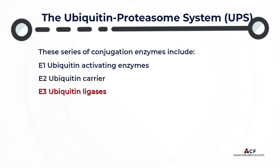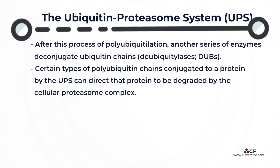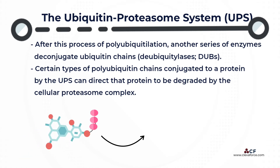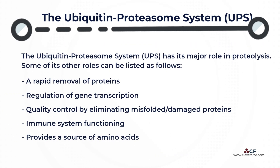E3 ubiquitin ligases. After the process of polyubiquitylation, another series of enzymes can de-conjugate ubiquitin chains; these enzymes are known as deubiquitylases. Certain types of polyubiquitin chains conjugated to a protein by the UPS can direct that protein to be degraded by the cellular proteasome complex. The ubiquitin proteasome system has its major role in proteolysis.